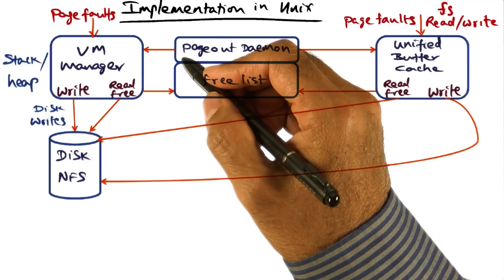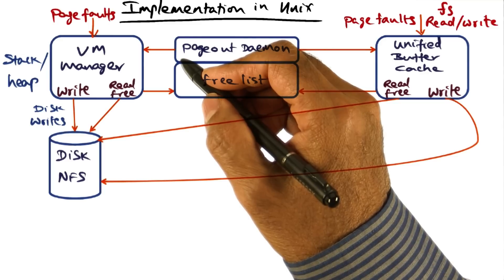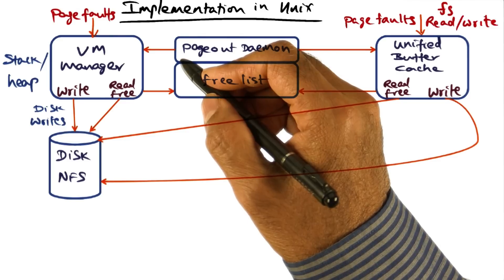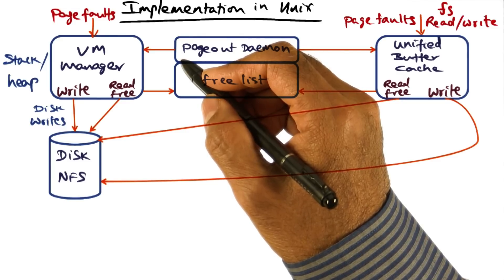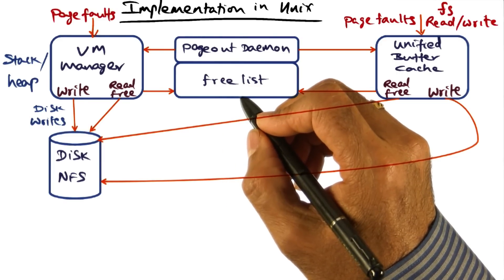In any good systems research, the prescription is as follows. You identify a pain point. Once you identify the pain point, you think of what may be a clever solution to that. Then a lot of heavy lifting actually happens in taking that solution, which may be a very simple solution. But implementing that is the hard part.